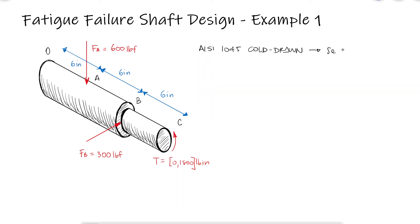The steel has a fully corrected endurance limit of 40 KSI. Assuming fatigue stress concentrations of 2.1 for KF and 1.7 for KFS, what should the diameter of section BC be if the design factor is 2.5 and we're using the DE Gerber and DE Goodman criteria?